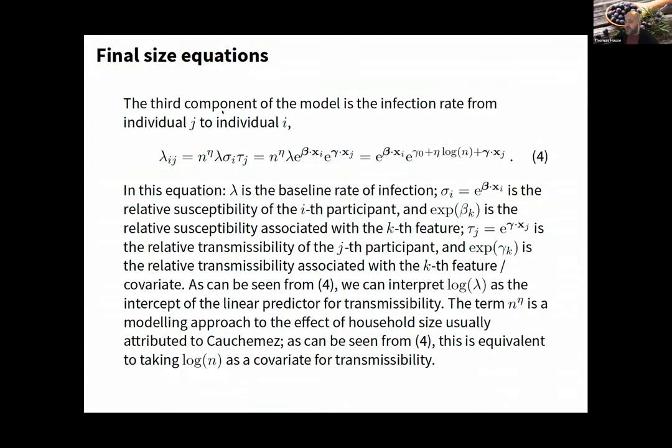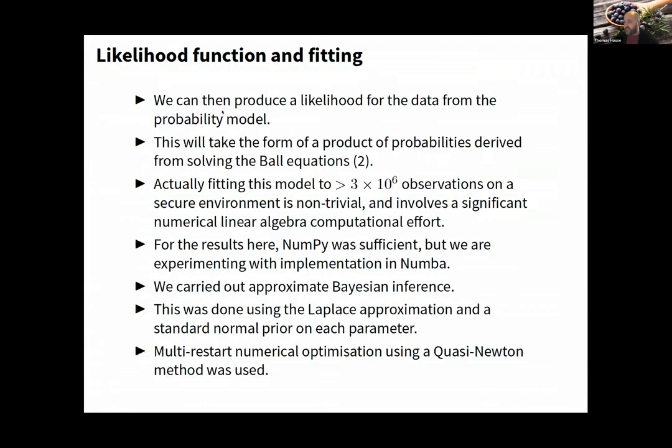The reason the Laplace transform comes in is because of the Sellke transformations—you need the Laplace transformation of the distribution of infection times. Then we put covariates on the risk of infection coming into the household, transmissibility of each person, and susceptibility of each person.